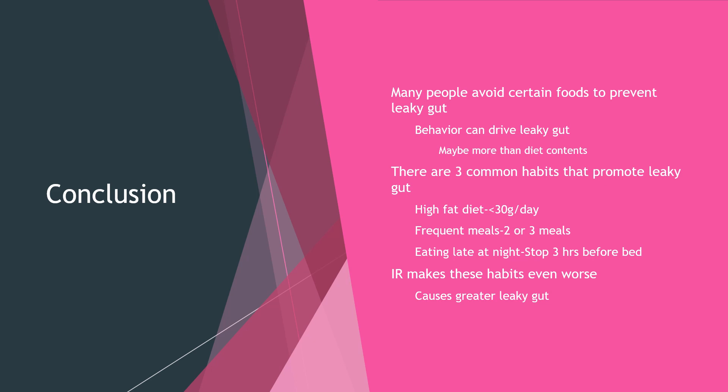Many people avoid certain foods to prevent leaky gut, but behavior drives leaky gut as well — and it's probably more important than diet based on the physiology. There are three common habits to address. First, a high-fat diet: bringing total fat intake to less than 30 grams per day for a period of time can help clear out bacteria with lipopolysaccharide and make you less efficient at absorbing it. Second, frequent meals: stick to two or three meals to give the migrating motor complex a chance to clean out bacteria. Third, eating late at night: stop eating three or more hours before bed. Finally, insulin resistance makes all of these habits worse — if you have type 2 diabetes or are insulin resistant, you absolutely need to correct that as well.